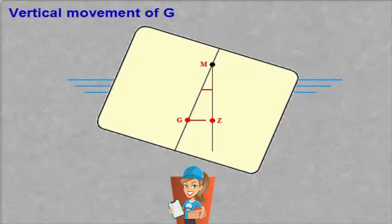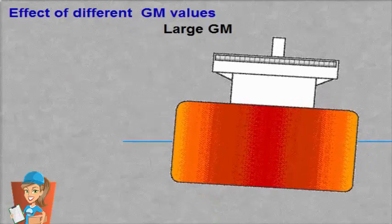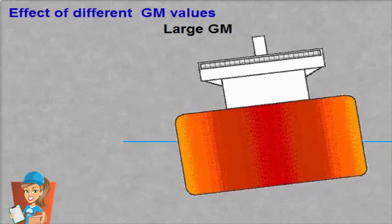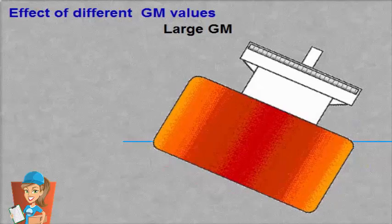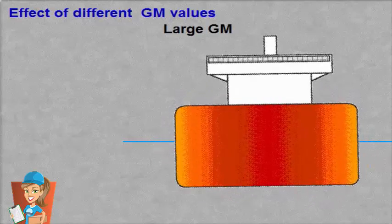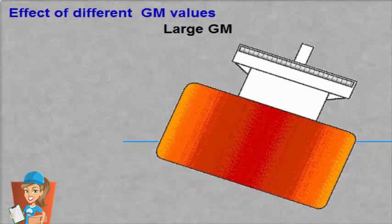If the ship has a large GM value, the ship will roll rapidly. The movements can be very rough. Cargo and equipment may become unlashed. In extreme conditions, much damage could be done to the ship and crew.